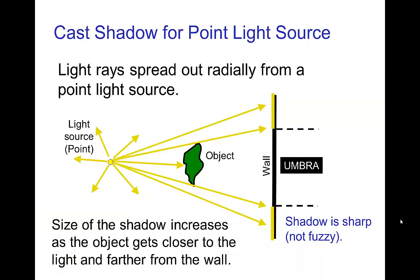A more interesting type of light source would be a point light. So with a point light, the light rays come out radially in every direction. Now the shadow is still sharp, it still has a dark umbra.